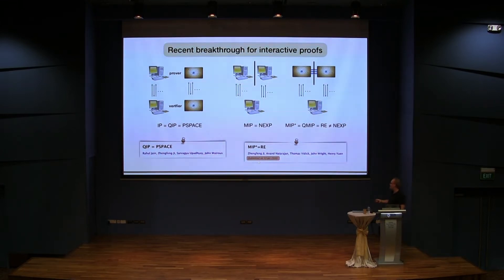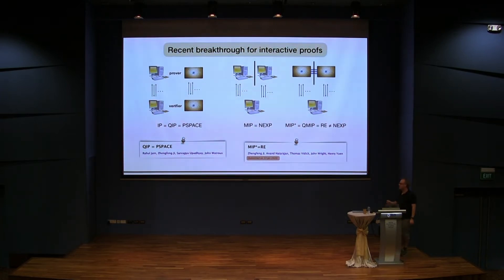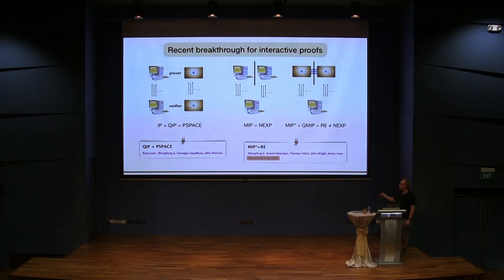Because of some very recent activity — some very recent results — I want to continue this excursion into complexity a little bit more. It also shows again that communication constraints might be very helpful. There are these complexity classes where essentially the task is for a prover to convince a verifier using communication between them that a certain problem has either a positive or negative solution.